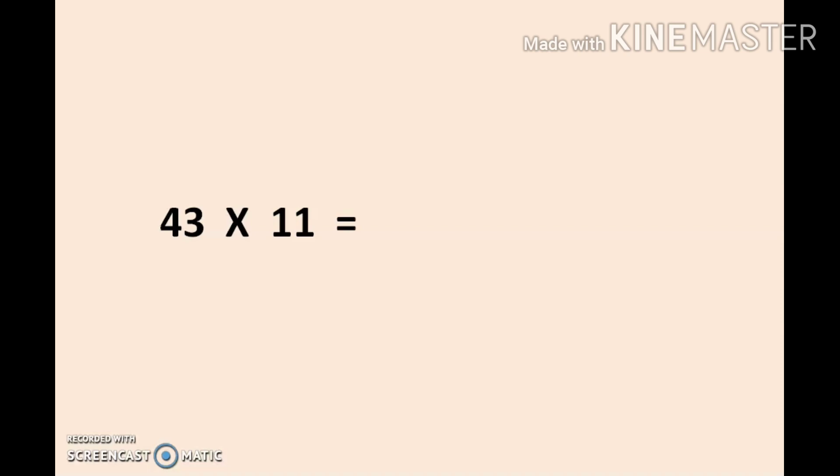Always remember this. For 43 × 11, on the right-hand side we have 3. We write this number as it is. Next, we add 3 with 4. From right to left, we add 3 with 4, so we get 7. Then the remaining number 4, we write as it is. So 43 × 11 equals 473.